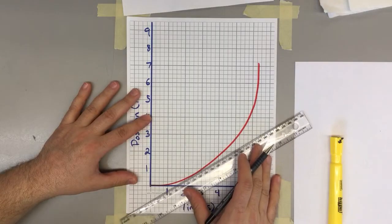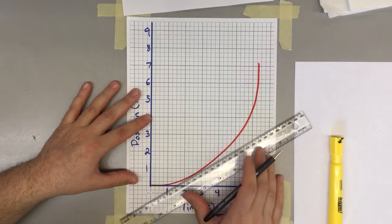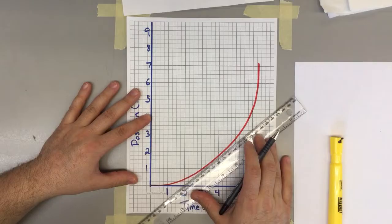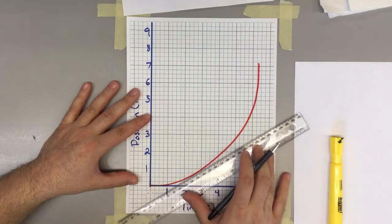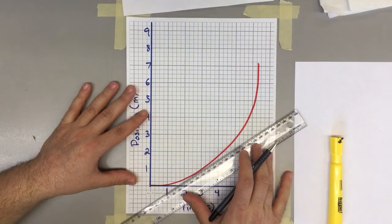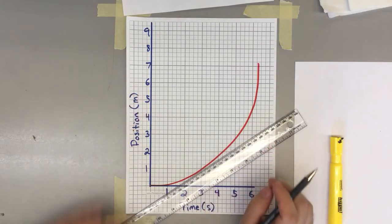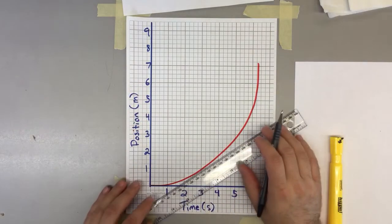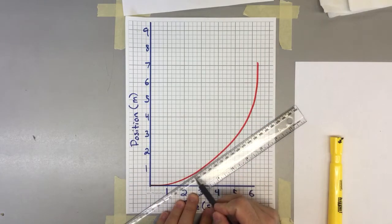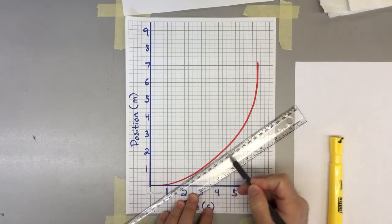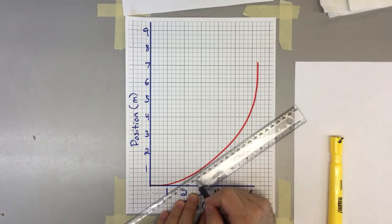Now, bring your ruler up to that point on the line that you made and kind of rock the ruler back and forth to figure out what line best approximates the curve at that point. What I like to do is take a look a little bit to the left of the dot and a little bit to the right of the dot. Let's go, say, two centimeters.